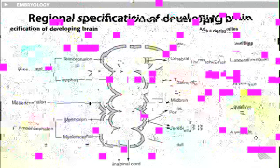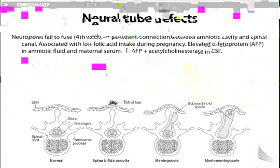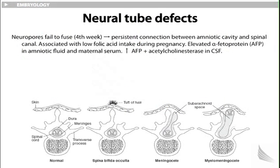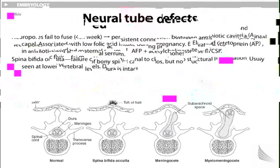Neural tube defects involve issues with folate metabolism; neural pores fail to fuse at approximately the fourth week. Note the rule of fours: four chambers of the heart, four limb buds. There is a persistent connection between the amniotic cavity and spinal canal, associated with low folic acid intake during pregnancy. Elevated alpha-fetoprotein in amniotic fluid and maternal serum is expected, as well as increased alpha-fetoprotein plus acetylcholinesterase — an enzyme that breaks down acetylcholine — in cerebrospinal fluid. Spina bifida occulta: failure of the bony spinal canal to close but no structural herniation, usually seen at lower vertebral levels; the dura is intact.